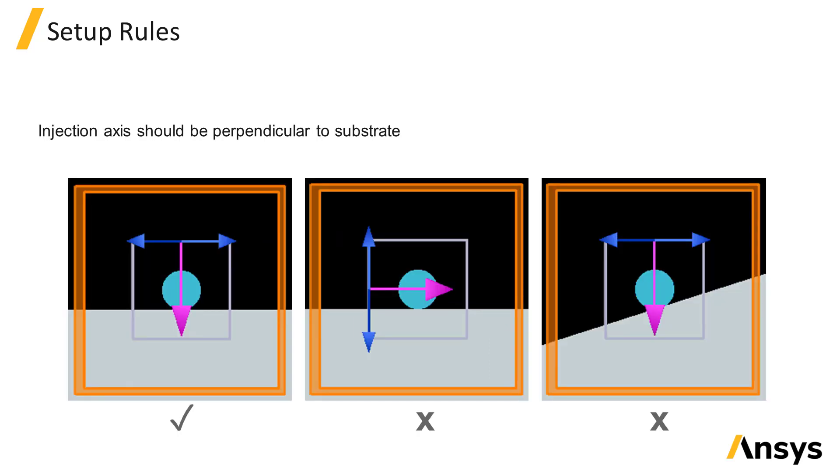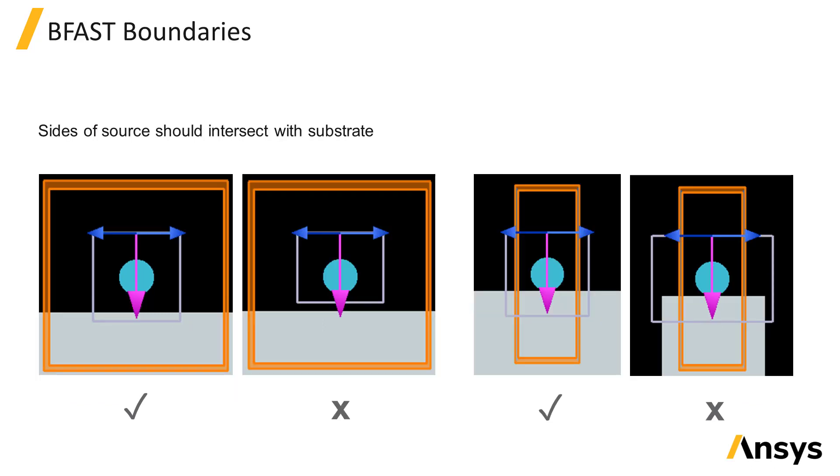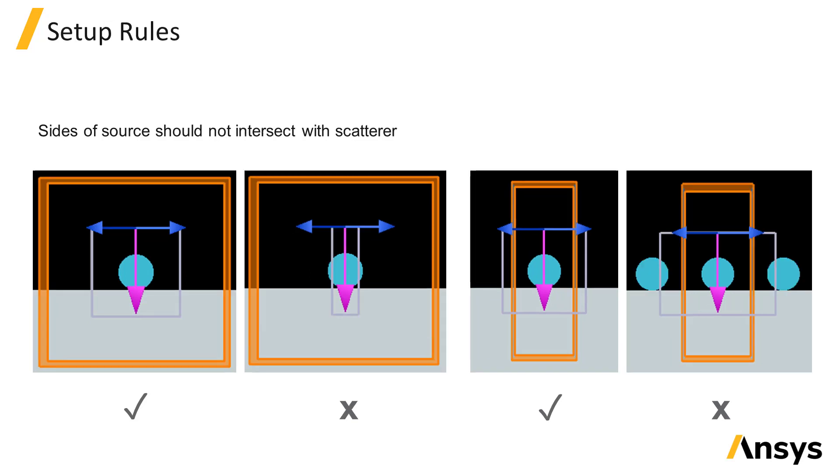If there is a substrate, the source injection axis should be perpendicular to the substrate. The edges of the source should intersect with the substrate. The source should not intersect with the scattering object.